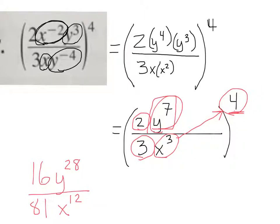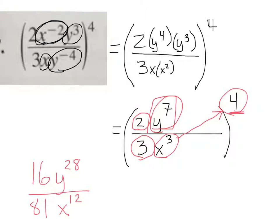So let's finish this up. What we need to do is see if 16 over 81 will reduce. 4 goes into 16, but does 4 go into 81? No. So this right here is your final answer — this is the most reduced. Now let's talk about what we did. We made all the exponents positive. We took x to the negative 2 and moved it to the bottom, and y to the negative 4 and moved it to the top. Then y to the fourth times y to the third gave us y to the seventh, and x times x squared gave us x cubed. Then we raised everything to the fourth power.